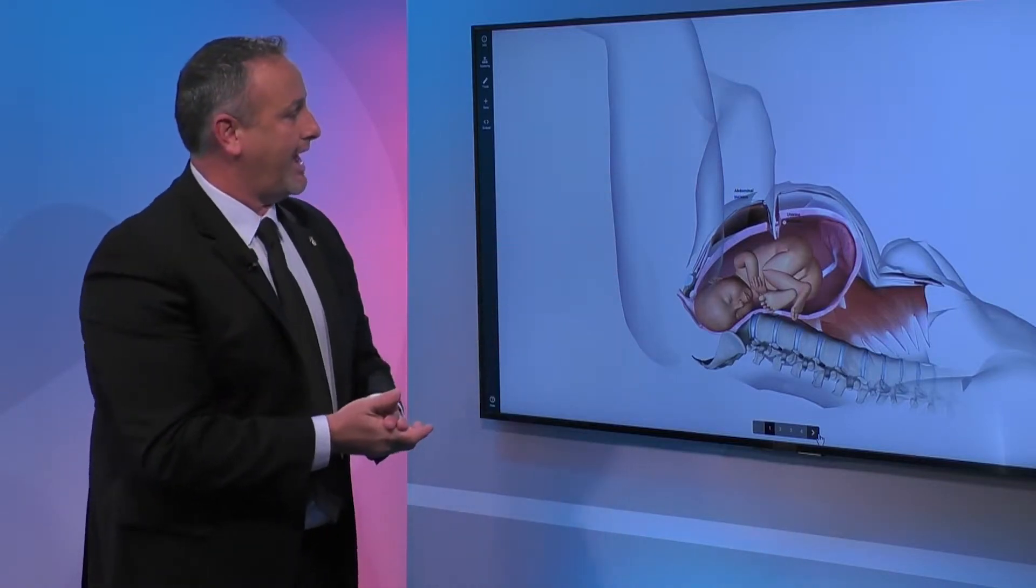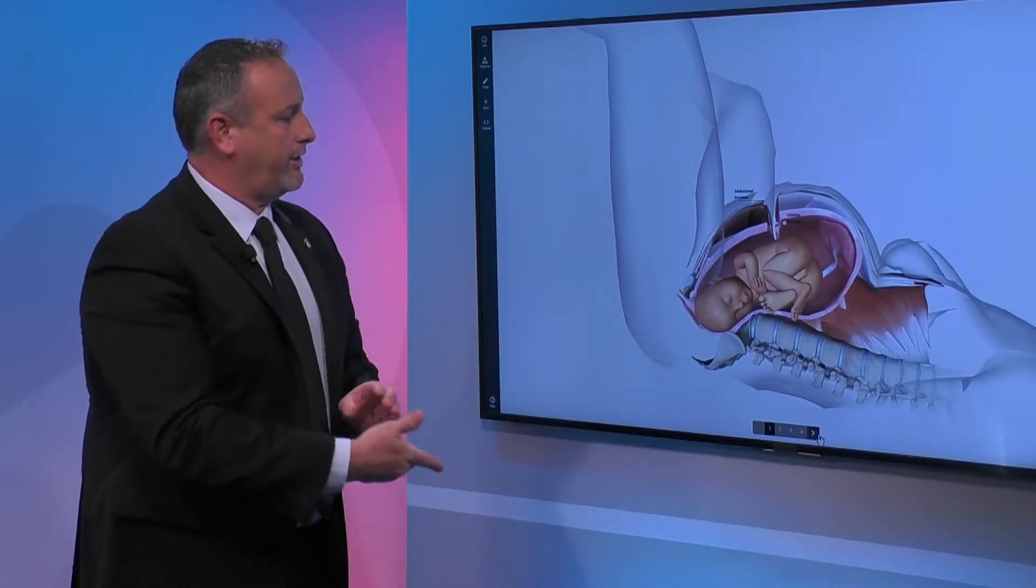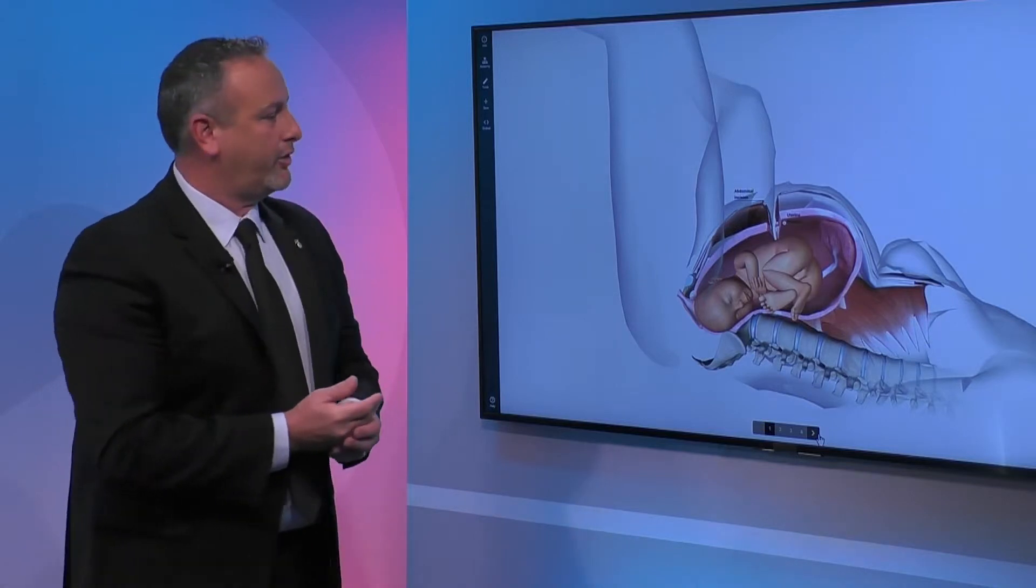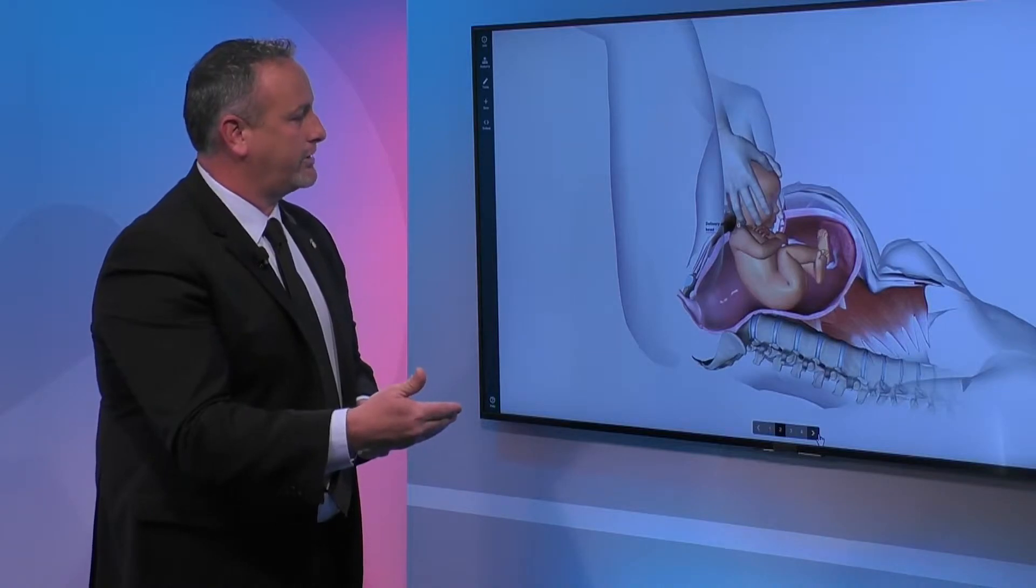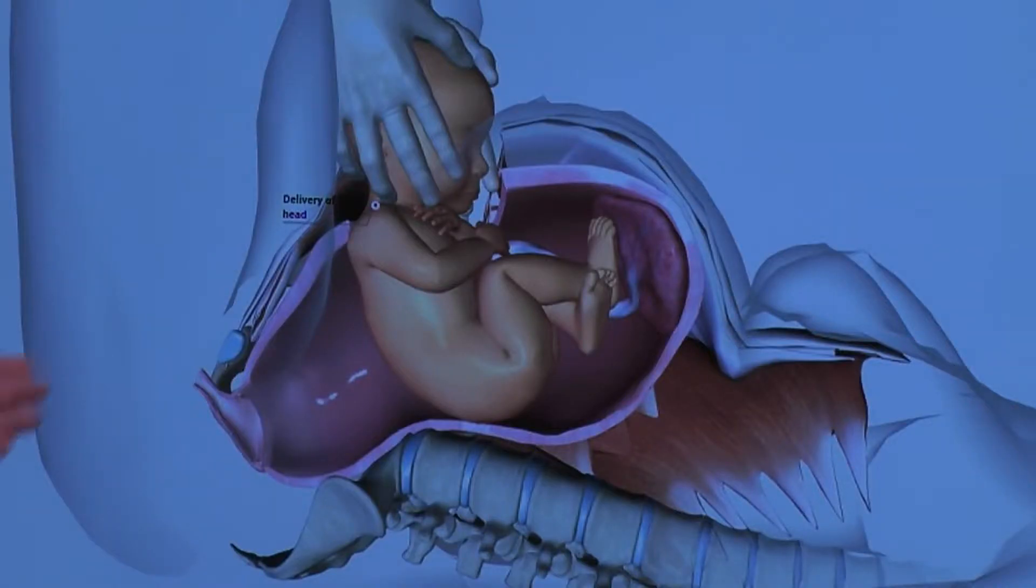First, you're making an incision in the abdomen, usually in the lower abdomen, what we call a Pfannenstiel or bikini cut. Then once you go through the different layers, you're getting to the actual uterus. You're gonna make an incision in the uterus, and here you see once that incision is made, assuming the baby is headfirst, you're delivering the baby's head.